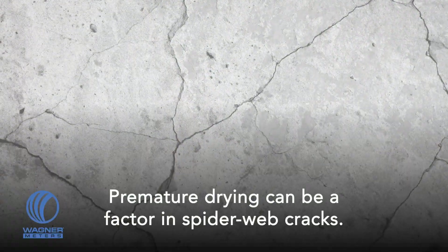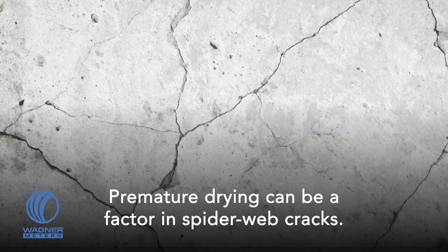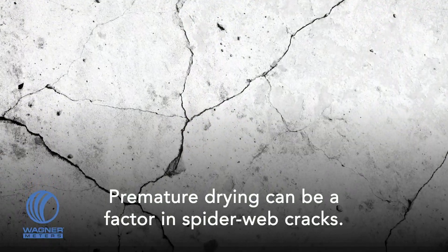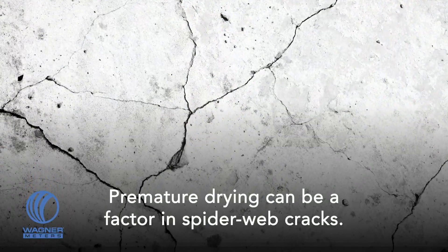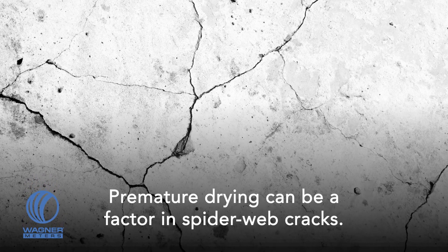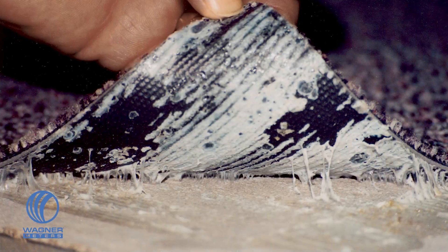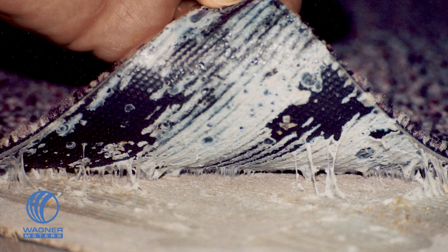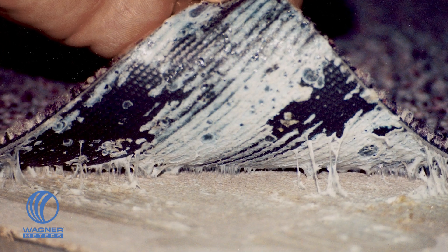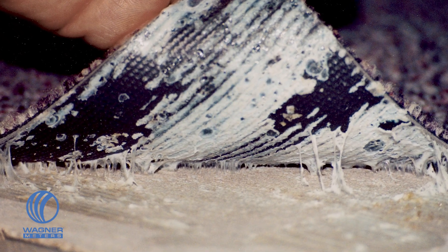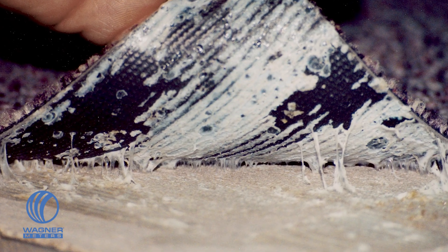Crazing cracks are very fine cracks on the surface that spread out in random directions. These will appear when the top of the concrete slab loses moisture too quickly. Flooring installation professionals realize that cracking is problematic, but moisture-related issues can cause more serious problems with floor coverings.